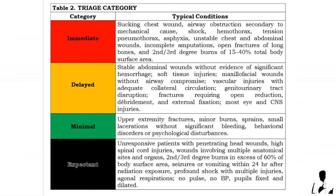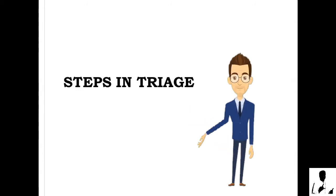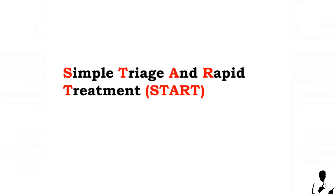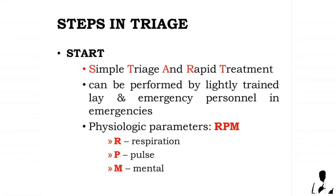Table 2 shows the typical conditions of the four-level triage categories. START — Simple Triage and Rapid Treatment — can be performed by lightly trained lay and emergency personnel. Physiologic parameters are assessed using the mnemonic RPM: R for Respiration, P for Pulse, M for Mental status. For a deeper discussion of START, click the next button after watching this video or check the link in the description box below.